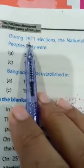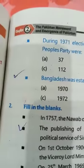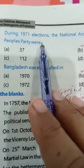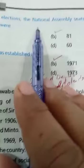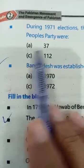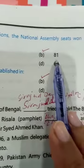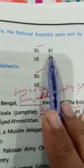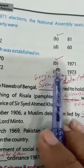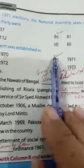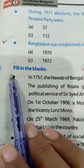During 1971 elections of the National Assembly, seats won by Pakistan Peoples Party were 81 — put the mark on option B. Bangladesh was established in 1971 — put the mark on option B. These are the correct options for the sentences given.